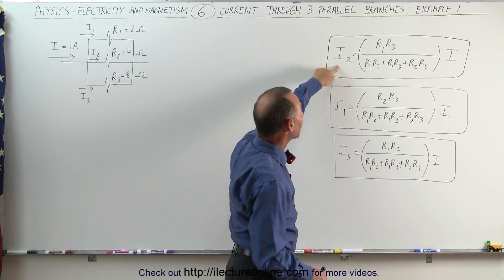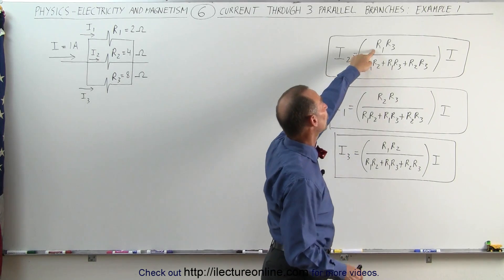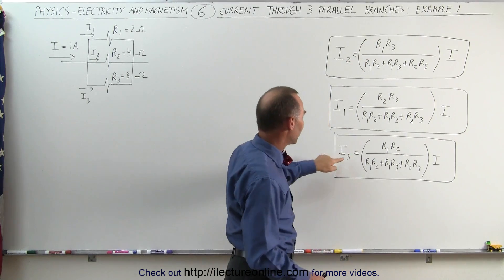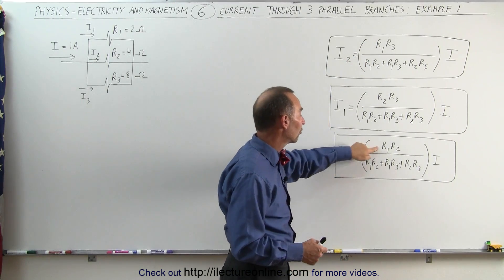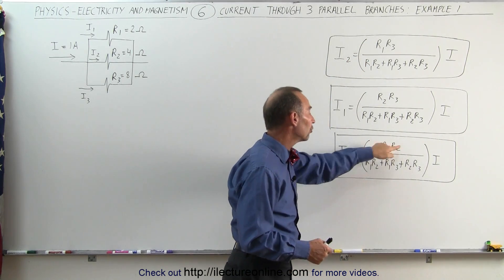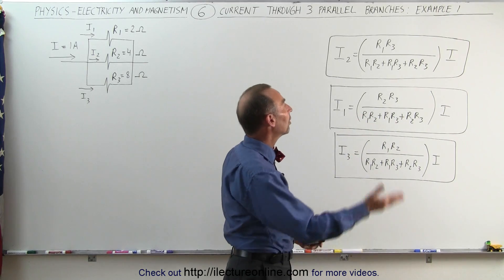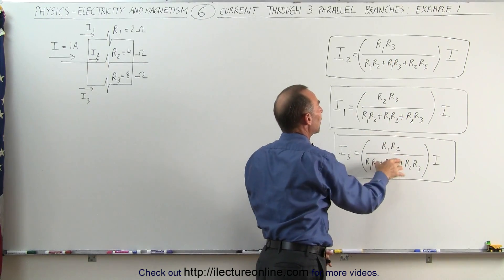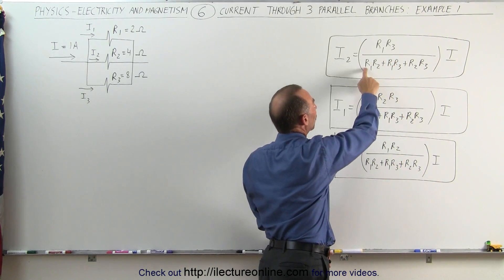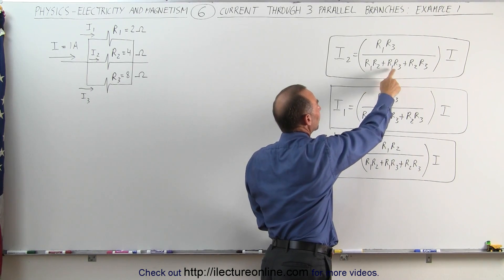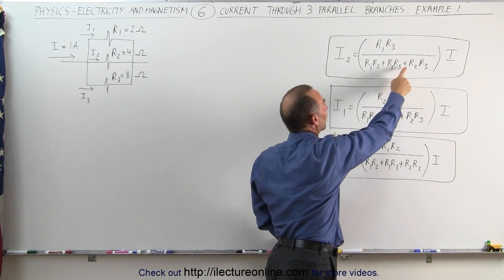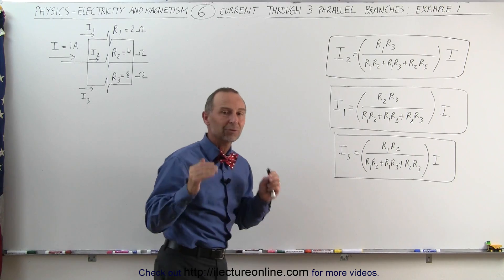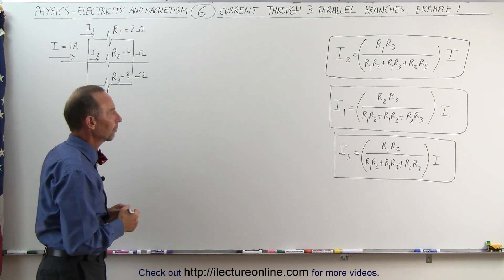For the middle branch, again we have the resistance of the other two branches in the numerator, and for the bottom branch, again we have the resistance of the other two branches in the numerator. And in the denominator we have the very same denominator for all three equations: R1 times R2, plus R1 times R3, plus R2 times R3, all multiplied times the current entering the branch point.